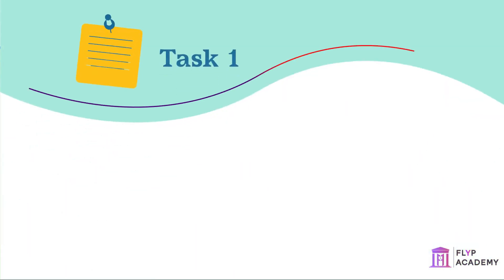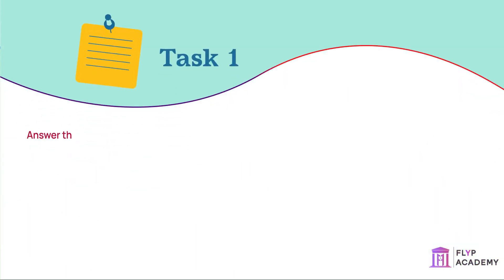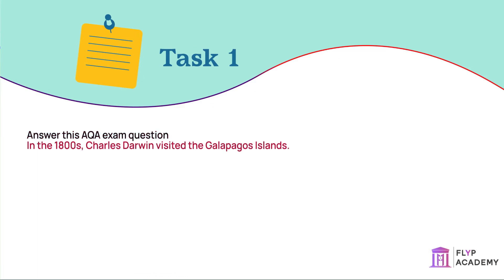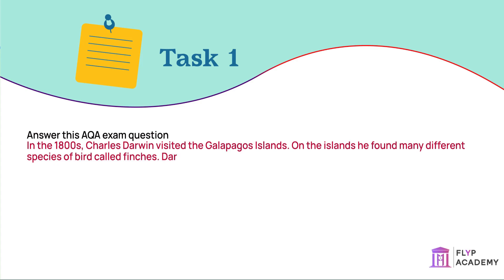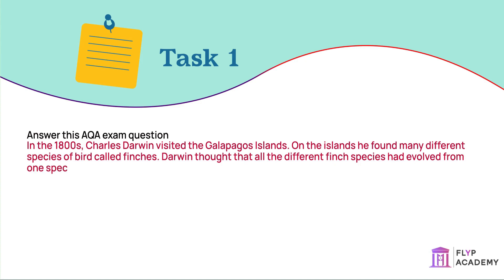Task: Answer this AQA exam question. In the 1800s, Charles Darwin visited the Galapagos Islands. On the islands, he found many different species of birds called finches. Darwin thought all the different finch species had evolved from one species of finch that had reached the islands many years before.